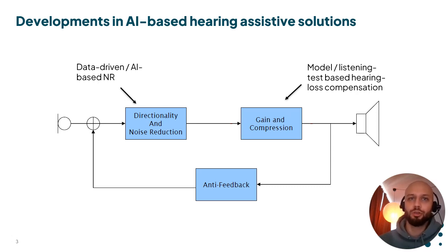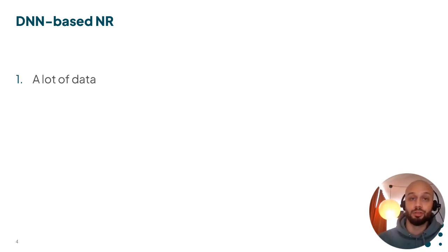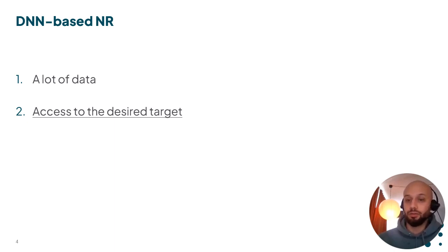So why have we seen such a huge effort in developing DNN based noise reduction, but very little effort in DNN based hearing loss compensation? I think this disparity could be attributed to three factors that are true when you develop a DNN based noise reduction system. First off, there's a lot of accessible data, which includes both recorded natural data and realistic synthetic data. But most importantly, the target is always available in the dataset and theoretically attainable — that is, if we can match the waveform to the ground truth target, we have achieved the task of noise reduction.